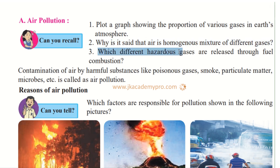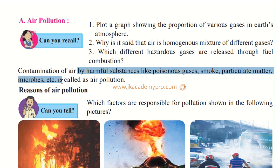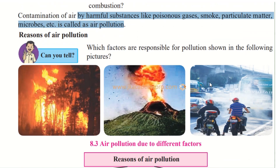Which hazardous, that is dangerous, gases are released through fuel combustion? Fuel means petrol, diesel, gas — all these things that we use to burn something. Contamination of air, that is when we spoil the air by harmful substances like poisonous gases, smoke, particulate matter, microbes, etc., is called air pollution. So air pollution happens because of all these pollutants that go into the air.